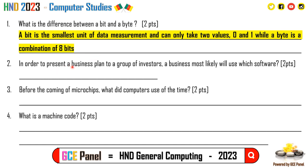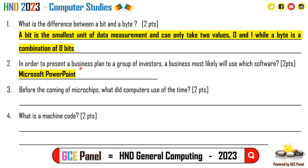Section B, Question 2: To present a business plan to a group of investors, a business will most likely use PowerPoint. Other modern tools include Canva, Google Slides, and similar applications, but PowerPoint remains the most conventional answer. Two points.